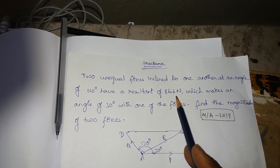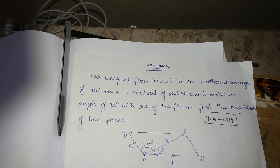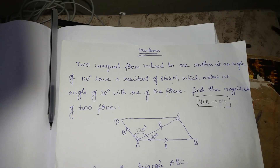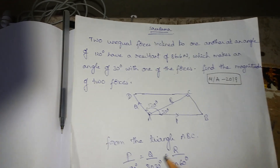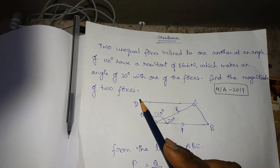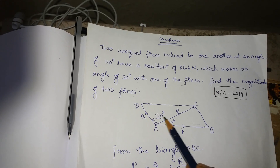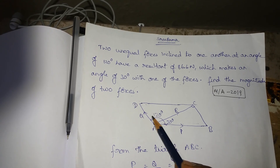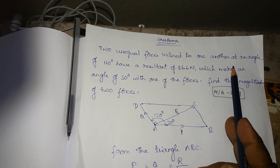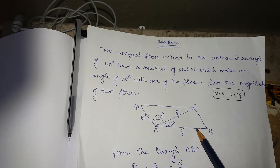So, what is the resultant? 86.6 newtons. You can use the diagram. This is P and Q — force P and force Q — having 120 degrees between one of the forces. So, 120 degrees is the angle between P and Q.